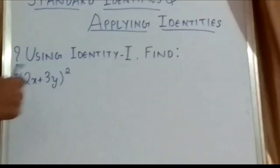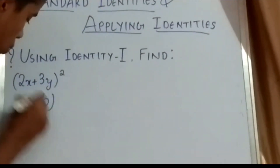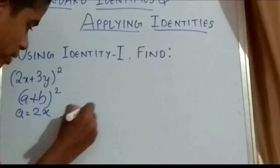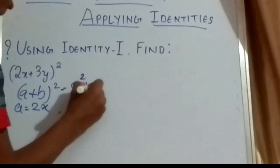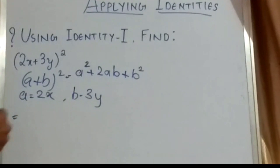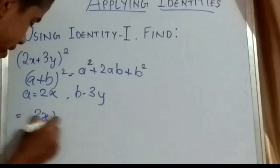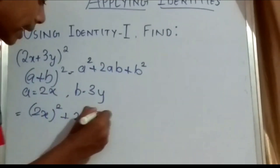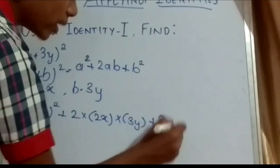Using identity 1, find (2x + 3y)². We know that identity 1 is (A + B)² = A² + 2AB + B². Here, A = 2x and B = 3y. So expanding, (2x + 3y)² = (2x)² + 2(2x)(3y) + (3y)².